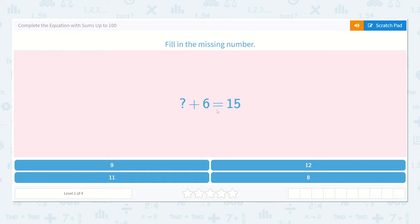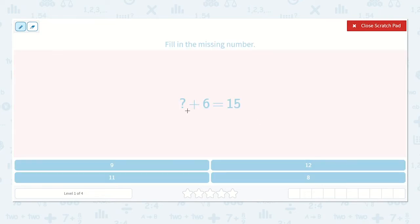A number plus 6 is equal to 15. Well, I need to figure out what I can add to 6 to make 15. So let's start with just drawing 6 dots.